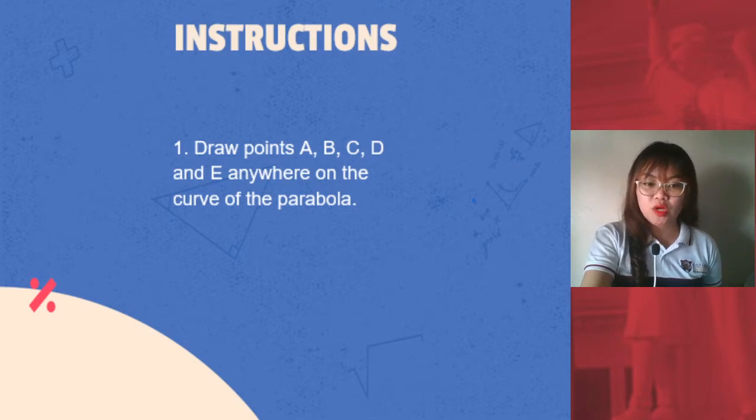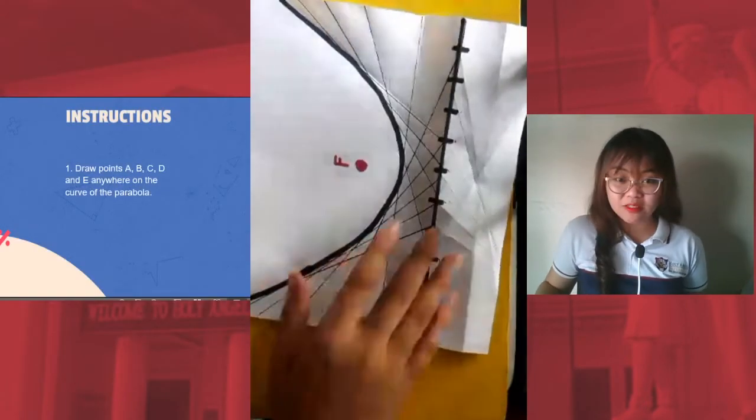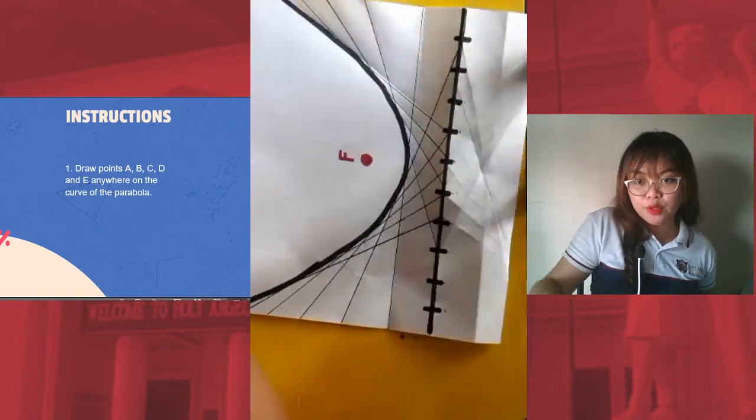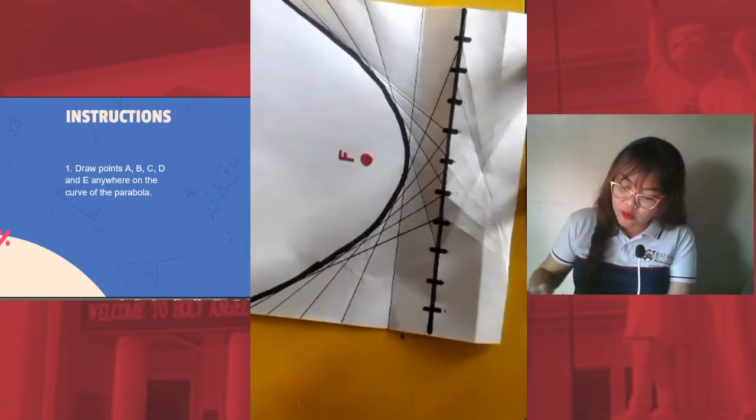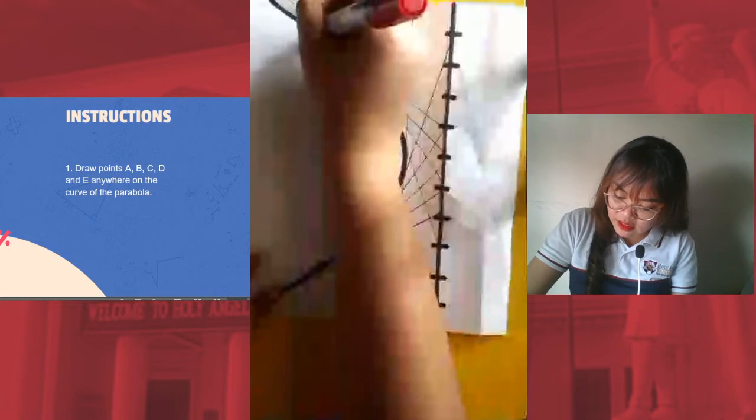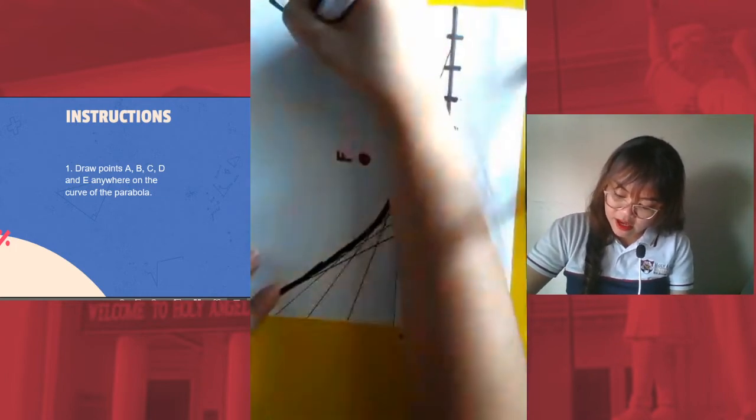So let's do that. We have this parabola, then we draw points A, B, C, D, and E anywhere. We have, let's say this is A. I'll label that A.